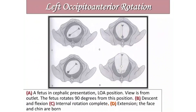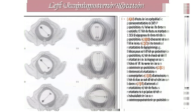The left occipital anterior is the normal position. In this picture, the fetus is in cephalic presentation with position left occipital anterior. The occiput rotates 90 degrees from its position; descent and flexion take place as usual. Then internal rotation is complete, followed by extension — the face and chin are born. This is the normal mechanism in case of left occipital anterior.